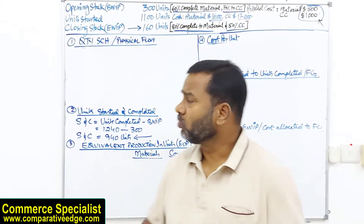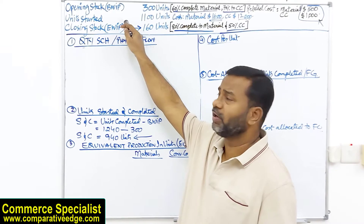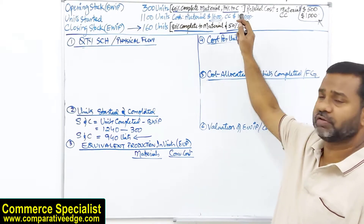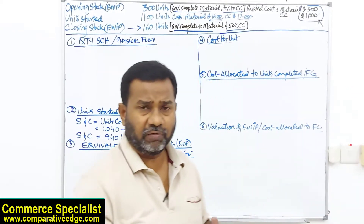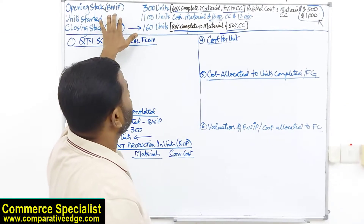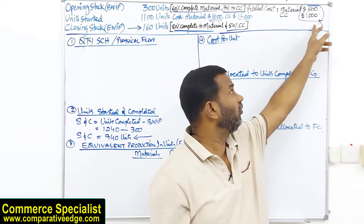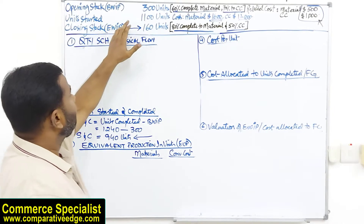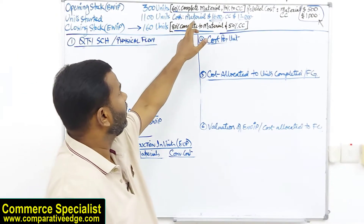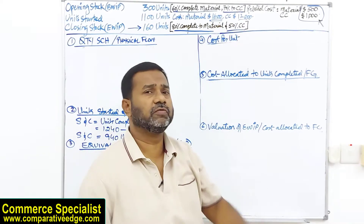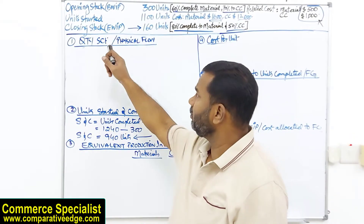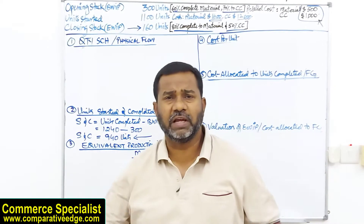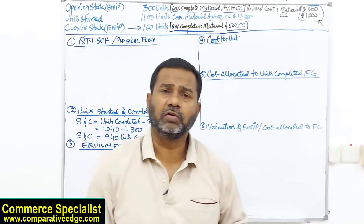First, let's look at the information given. We have opening stock — also known as beginning work in progress — of 300 units, 60% complete for materials and 70% complete for conversion cost (CC). The relevant costs incurred so far are also given for opening stock. Units started this period: 1,100 units, with a material cost of $1,600 and conversion cost of $12,000. Closing stock (ending WIP) is 160 units, 80% complete for material and 50% complete for conversion cost.